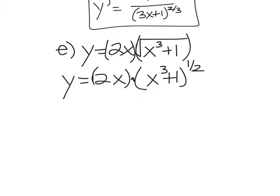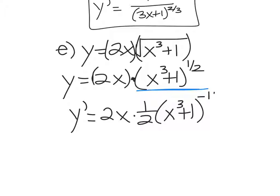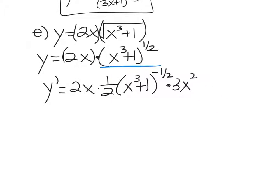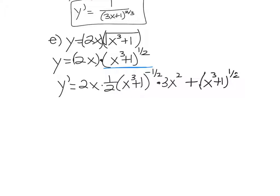Y prime equals. So we're going to go A times B prime. So 2x times the derivative of this part right here. So that would be 1 half times x cubed plus one to the what? Negative 1 half. Subtract 1 off. Times the derivative of the inside, which is 3x squared. Is everyone okay with that? That was just a times b prime plus b, which is x cubed plus 1 to the 1 half times a prime, which is 2. Now I need to fix this. I need to clean it up.